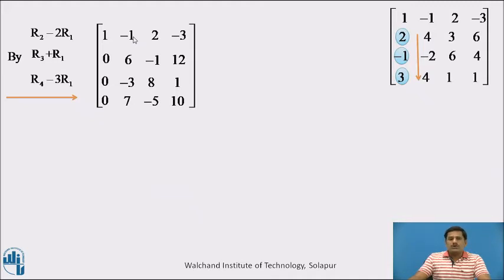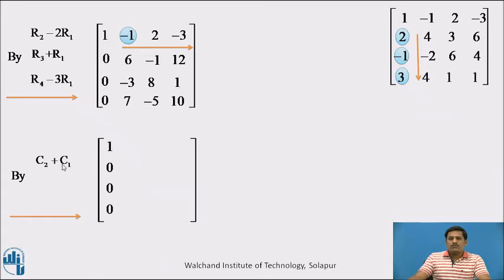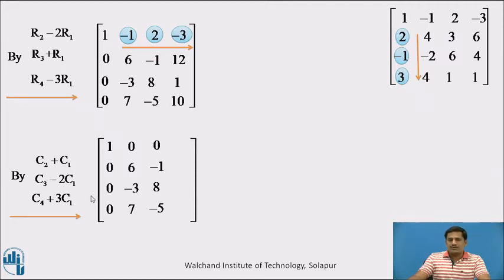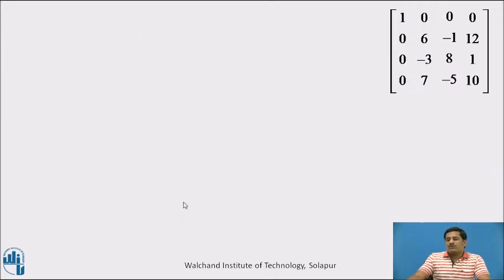As zeros are present in column number 1, these elements are not going to change. We write suitable column transformations to reduce these three entries to 0. The entry is minus 1, so we apply C2 plus C1 — this element reduces to 0 and remaining entries are as is. Next entry is 2, so we use C3 minus 2C1 — only the first entry reduces to 0. The next entry is minus 3, so performing C4 plus 3C1 reduces that entry to 0.